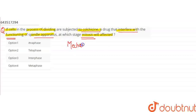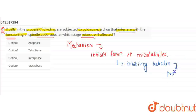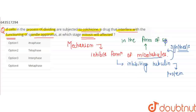Now we will explain the mechanism of colchicine. Tubulin protein forms in the form of spindle fibers. These spindle fibers are essential for the proper functioning of the spindle apparatus during cell division.